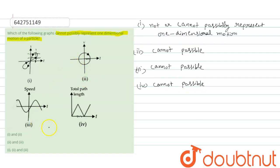So we can say that all four cannot represent. Therefore, option number four is correct, which says all four cannot be possible.